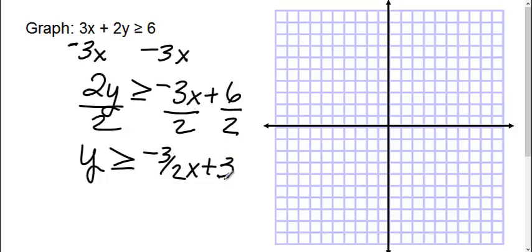So now I need to graph this. My y intercept is 3. So at 3 I'm going to put my dot. My slope is negative 3/2. 1, 2, 3, down 3 to the right 2.